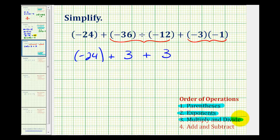The last step is to add and subtract from left to right. So we'll start by determining this sum here: (-24) + 3 is equal to (-21).